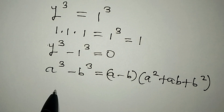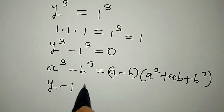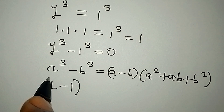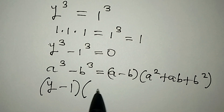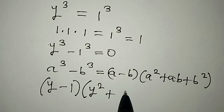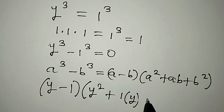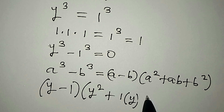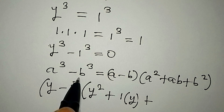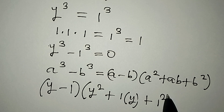So in place of a minus b, I have y minus 1. Then in the second factor, we are going to have y squared, plus ab which is 1 multiplied by y, plus b squared which is 1 squared. Close this and equate it to 0.